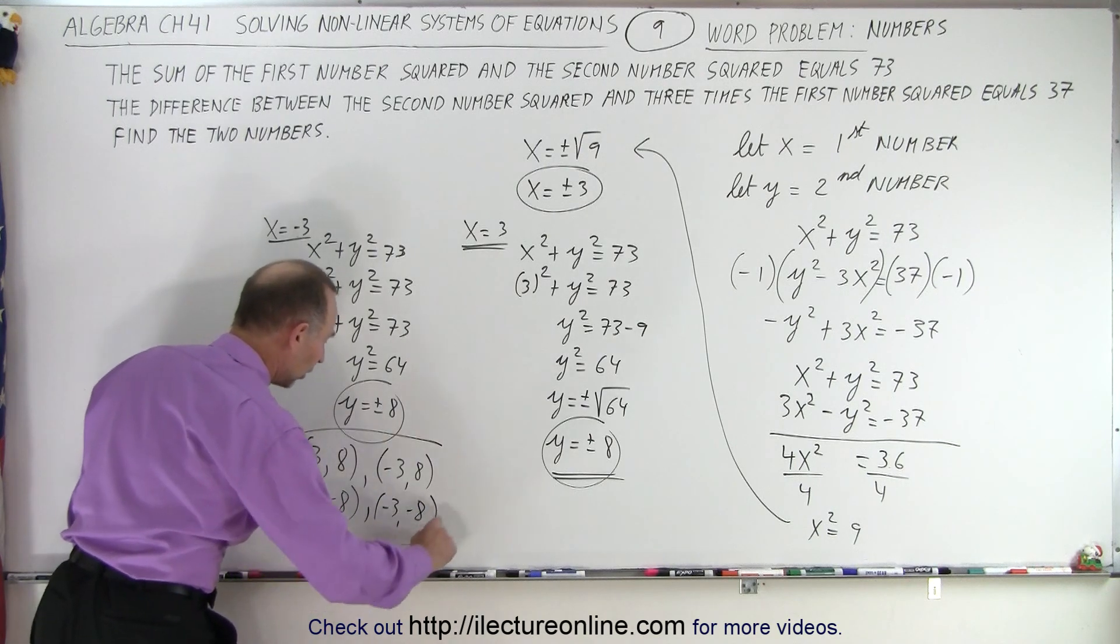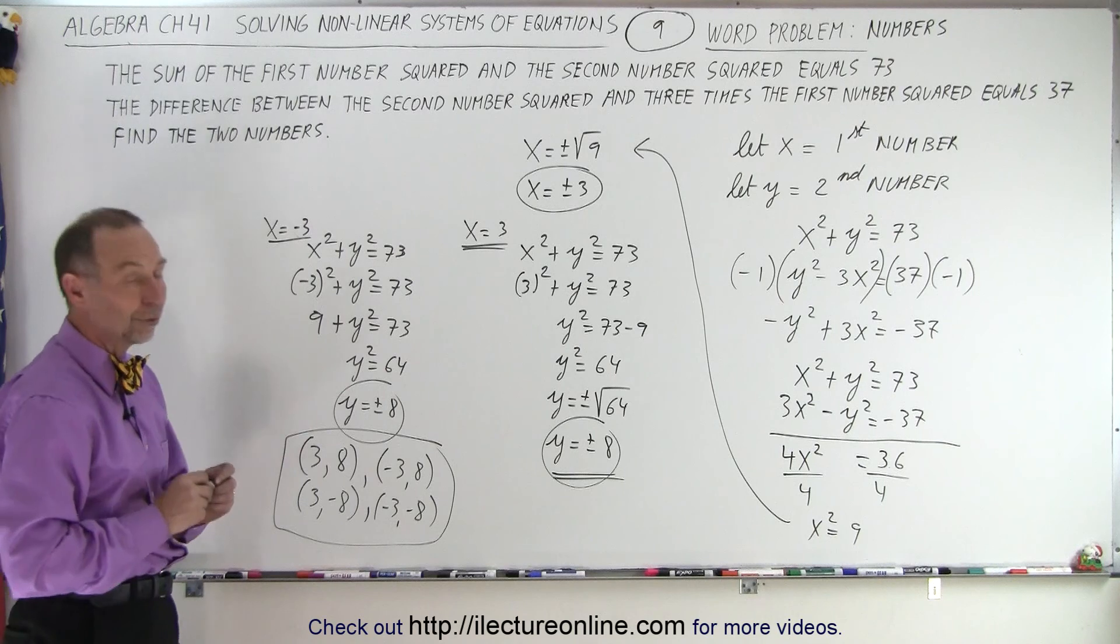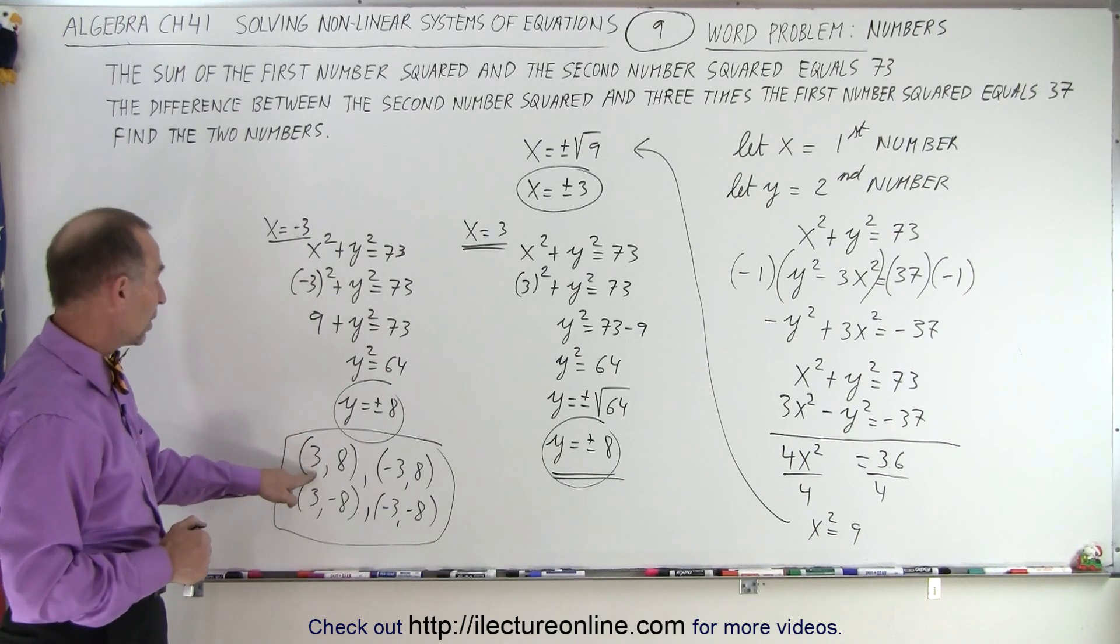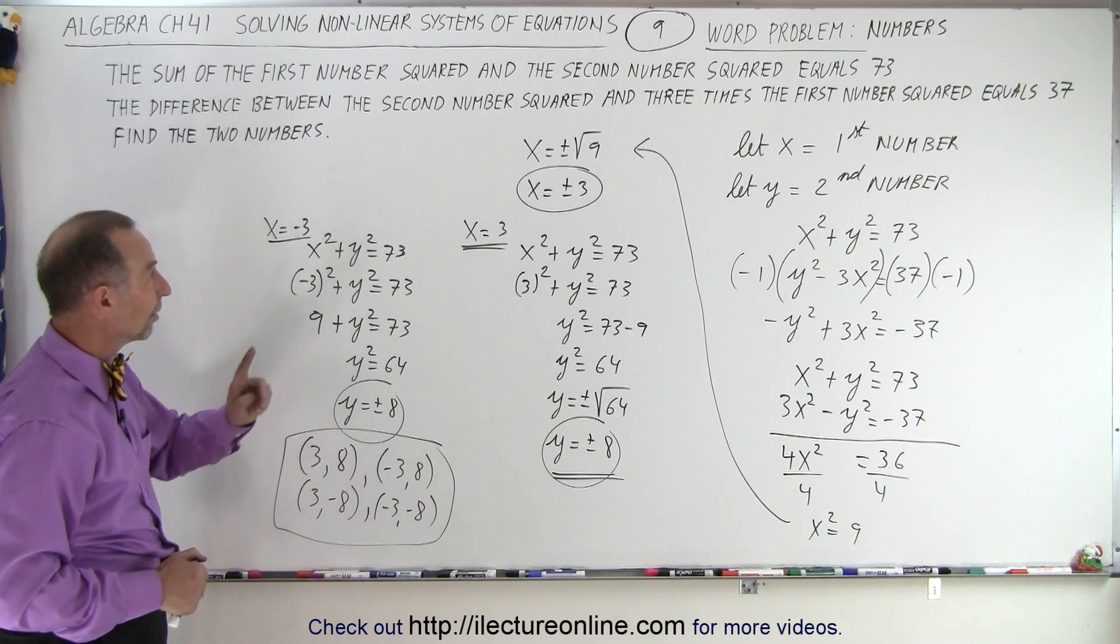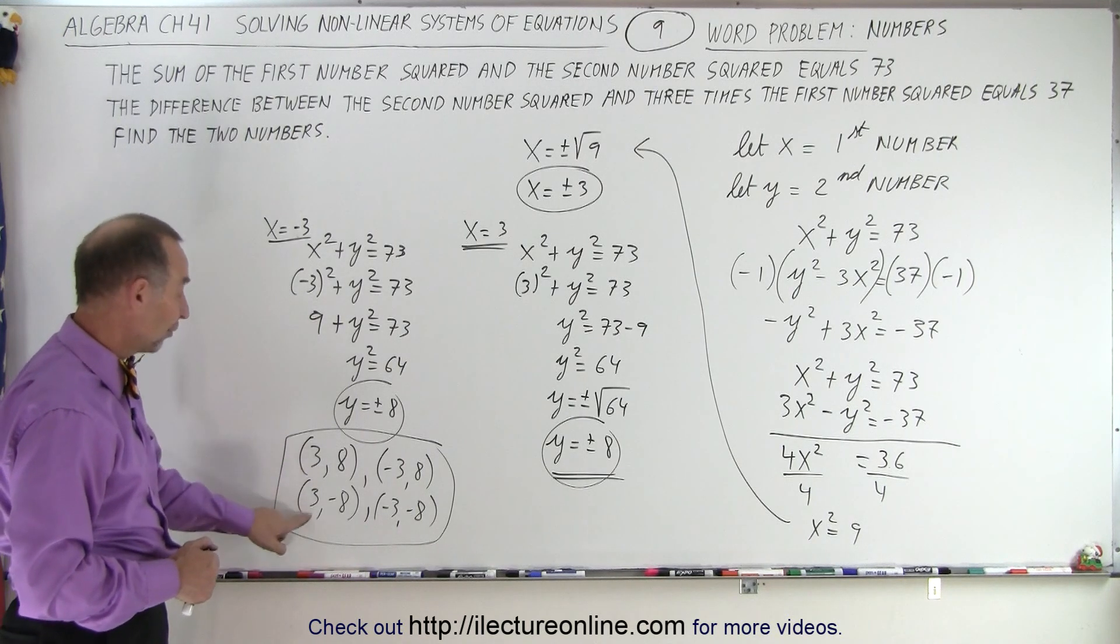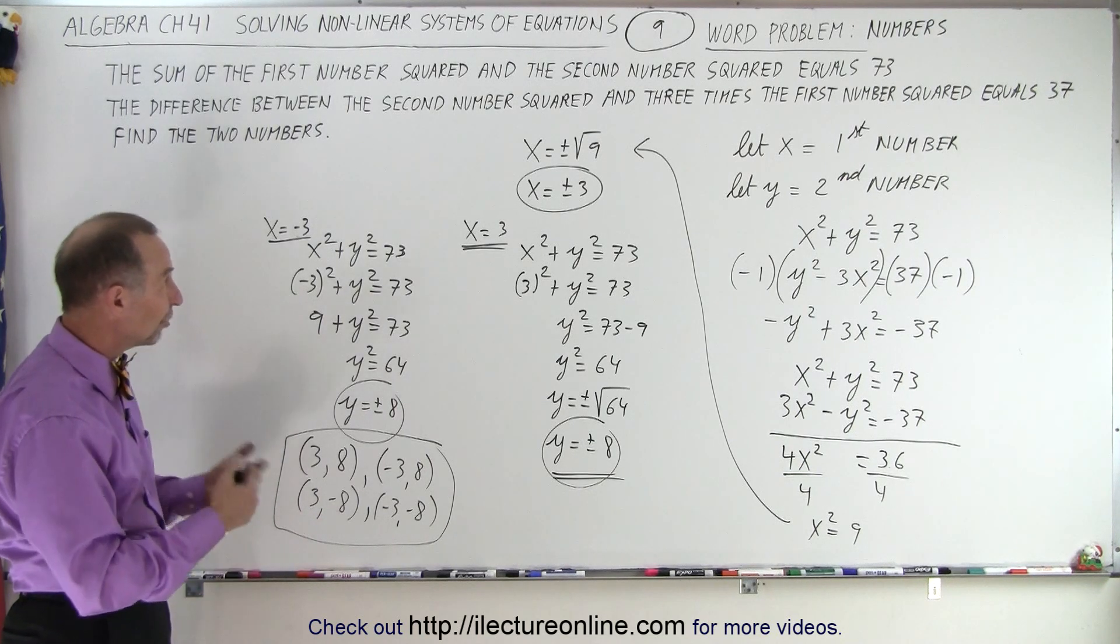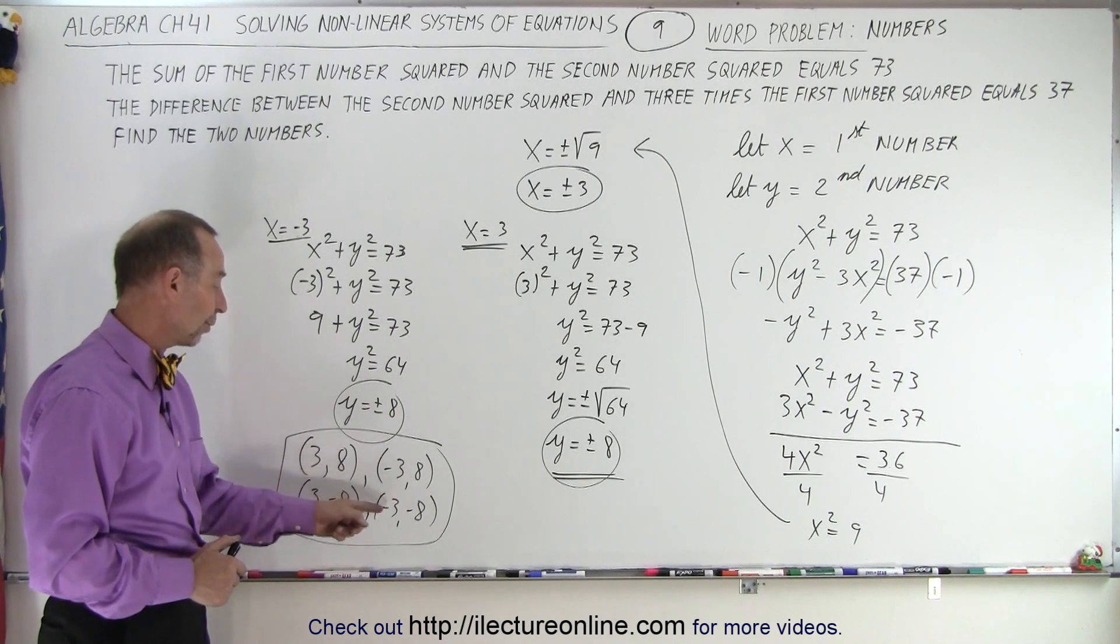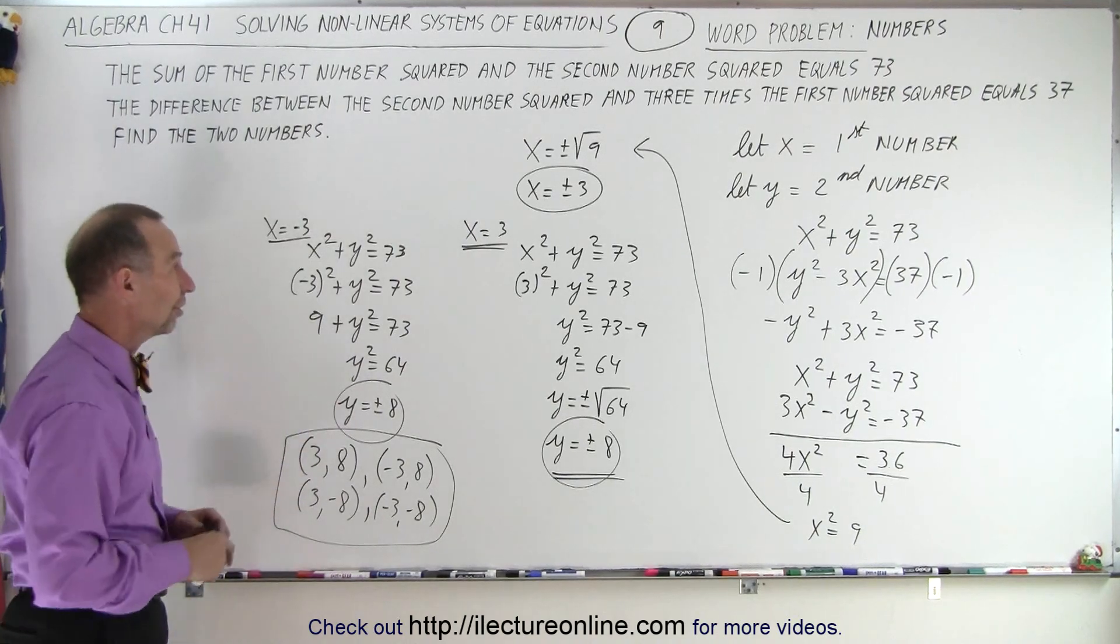Those four are all valid solutions to that system of equations. So that means that if the first number is a 3, you square it, the second number is 8, you square it, you get 73. If the first number is 3 and the second number is negative 8, and you square both, you still get 73. Or you could square this one and this one, you get 73. Or you could square this one and this one, you get 73. So in all cases, you get the correct answer.